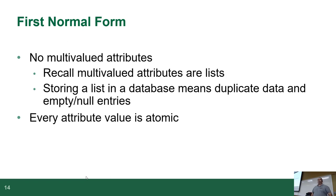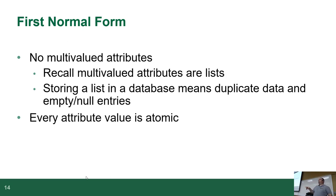Every attribute value must be atomic — meaning it cannot be broken down into smaller pieces. An example is a phone number: in most systems a phone number is an atomic value. In theory you could separate it into area code, exchange, and actual number, but 90% or more of IS systems treat it as a single field. An email address similarly cannot be broken down. An address, on the other hand, is not atomic — it's a composite column made up of multiple pieces.